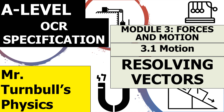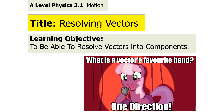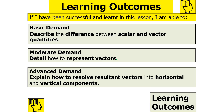Hello and welcome to this video for OCR A-level physics in the Forces and Motion module topic. We're going to be looking at the concept of resolving vectors. In today's lesson we're going to look at how to resolve vectors into their individual components. If we've been successful, we should be able to describe the differences between scalar and vector quantities, detail how to represent vectors, and explain how to resolve resultant vectors into horizontal and vertical components.